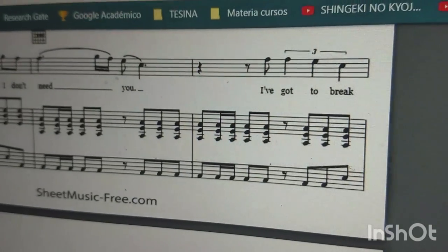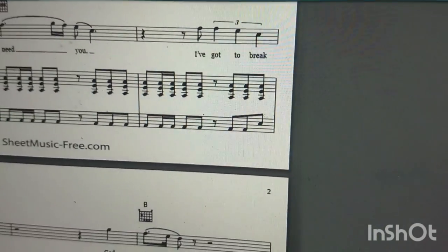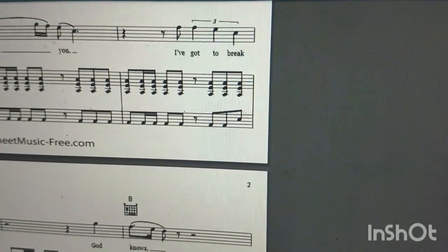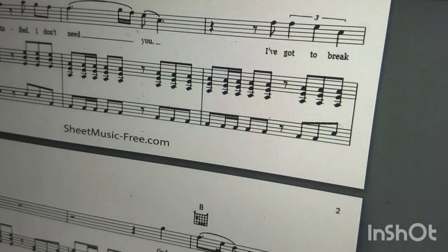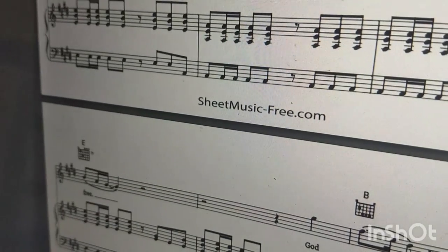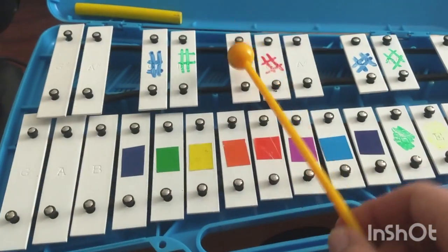Vamos a ir con la colita de la tercera frase. Un, i. Fa, fa, mi, do, si, la, sol. I've got to break free.